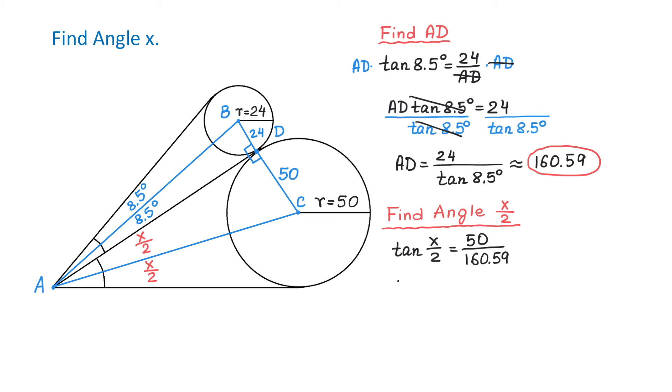To find the angle x over 2, we will take the tangent inverse of the fraction 50 over 160.59. Using a calculator, we will get that x over 2 is approximately 17.29 degrees.